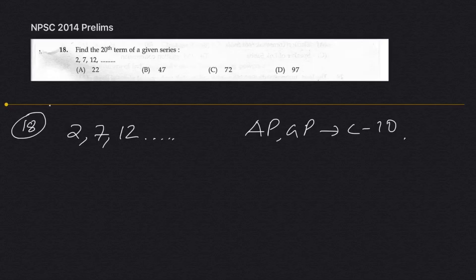For those of you who already recognize it, you know how to solve this question. I'll explain it in very simple terms. Find the 20th term of a given series — it's increasing by 5.